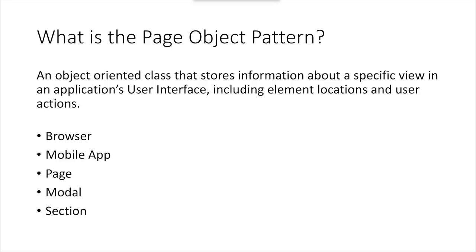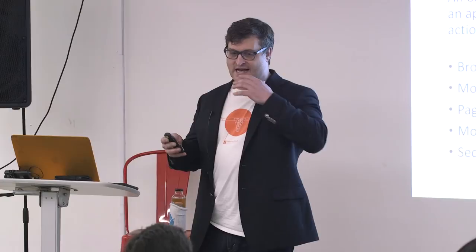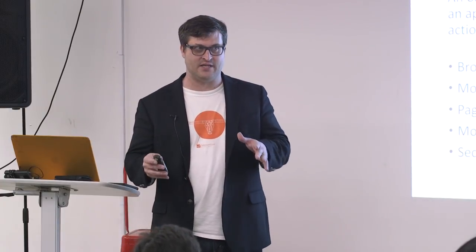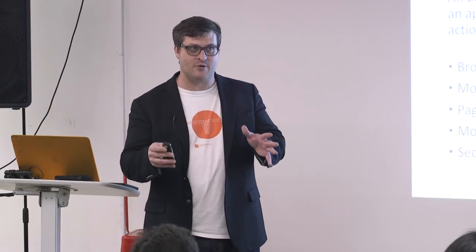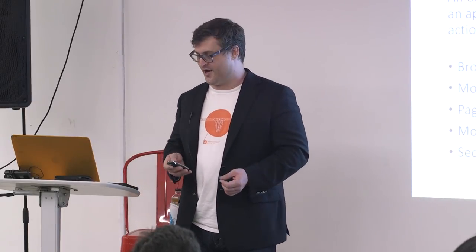What is the page object pattern? An object-oriented class that stores information about a specific view in the application's user interface. It includes element locations and actions. This can be a whole page, a mobile application, just a modal, or some section on the page. Just because it's a page object doesn't mean it has to be an entire page — there's lots of flexibility that still follows this model.